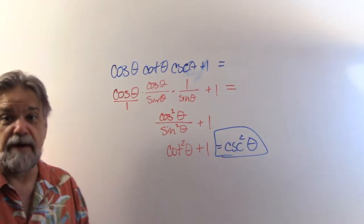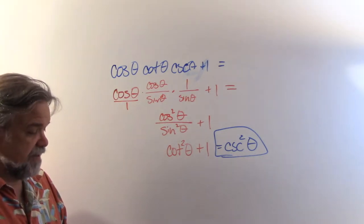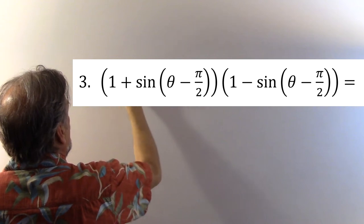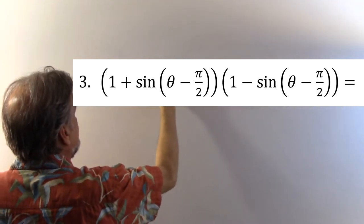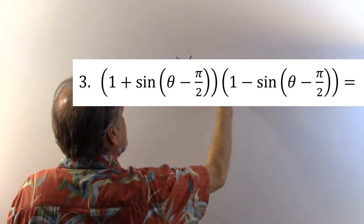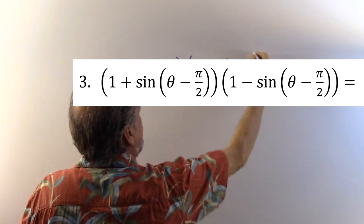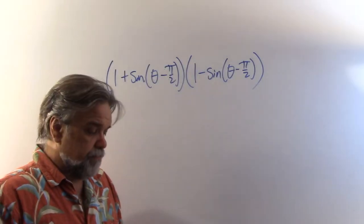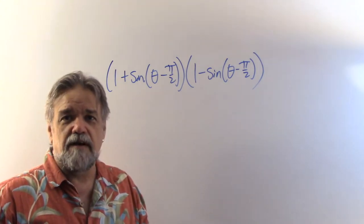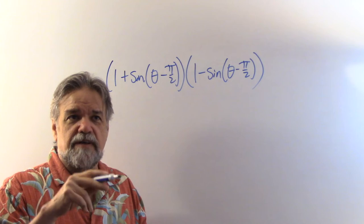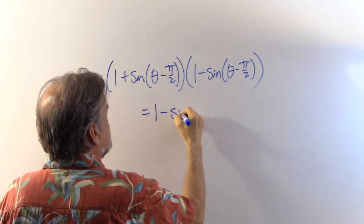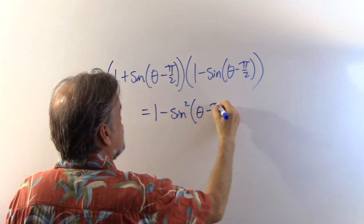And that's about as far as I can go. Number two had a little more going on than number one. Let's take a look at number three. We have one plus the sine of theta minus pi over two, times one minus the sine of theta minus pi over two. First off, I have one plus something times one minus something. One plus a times one minus a equals one minus a squared, so this is one minus the sine squared of theta minus pi over two.